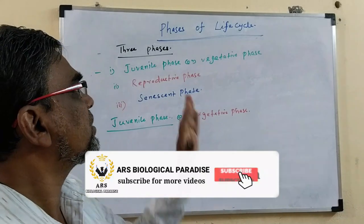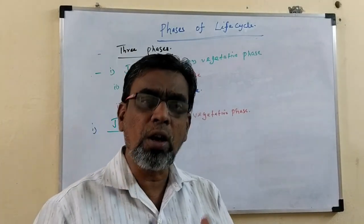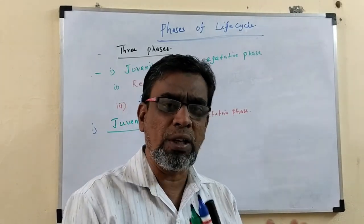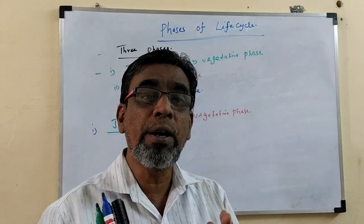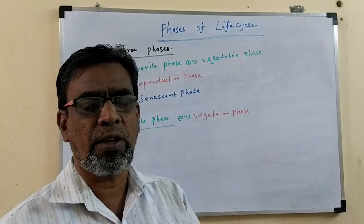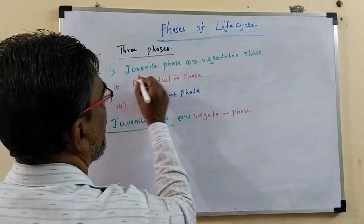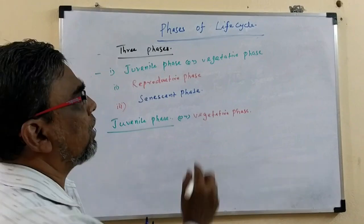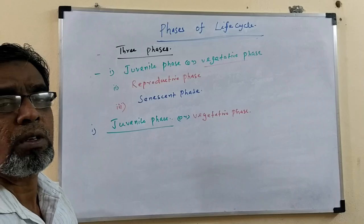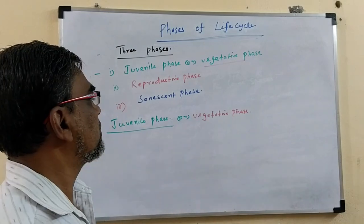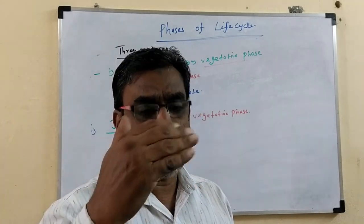Today, we are going to discuss the phases of the life cycle. In an organism's life cycle, there are three important stages or phases for each and every living thing. One is called the juvenile phase, otherwise called the vegetative phase. The second one is the reproductive phase. The third one is the senescent phase.